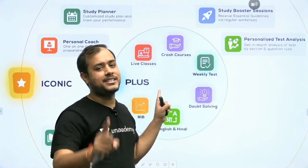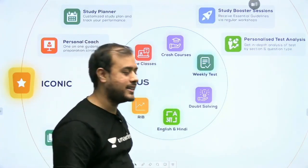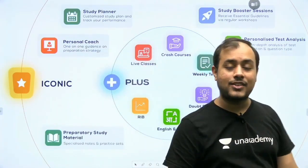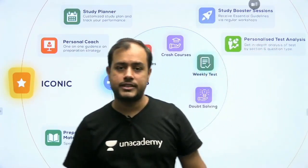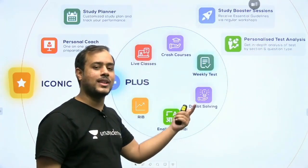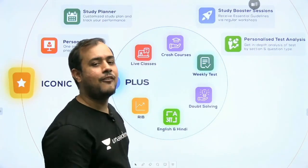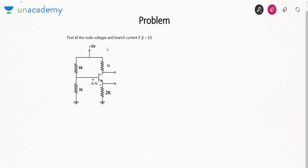Iconic will include study material, theory, question bank, and soon interview guidance — making it a complete package for a student who wants to go from being an average student to sitting in a PSU or M.Tech seat. Let's move on to the lecture now. In the previous three videos we have seen the different biasing techniques used in a BJT, and in this lecture we'll take a look at some problems based on this concept.